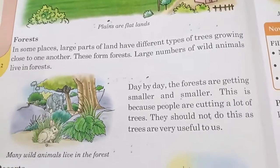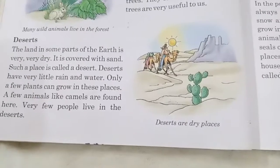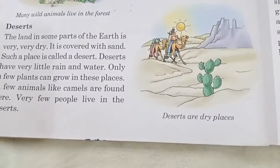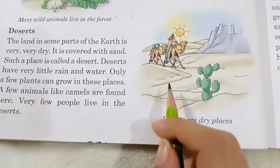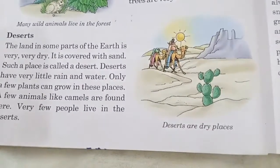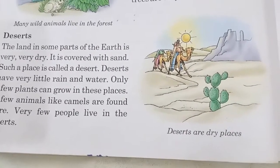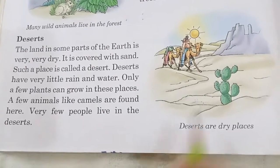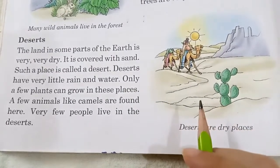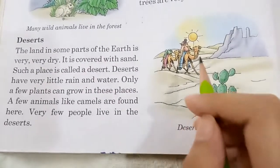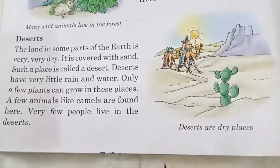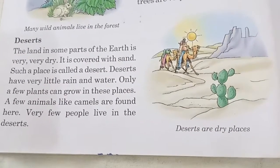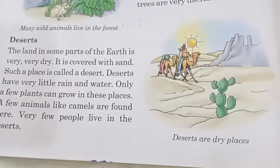Now come to deserts. This type of land is very very dry and covered with sand. Deserts have very little rain and water. Because of this, only few plants can grow here like cactus, and few animals like camels are found here. Deserts are very hot and dry land, that's why very few people live here.